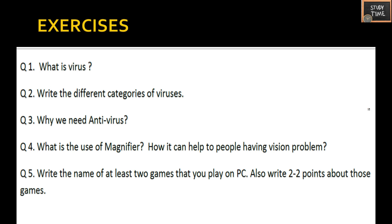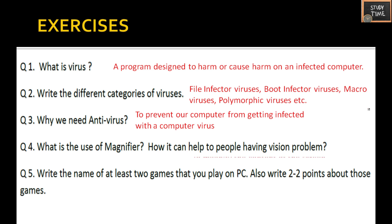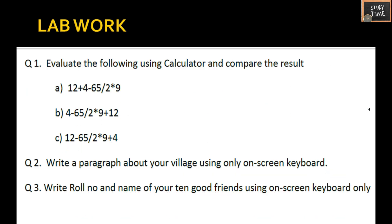Now we will see the exercises from this chapter. What is a virus? — A program designed to harm or cause harm on an infected computer. Write the different categories of viruses: file infector viruses, boot infector viruses, macro viruses, polymorphic viruses. Why do we need antivirus? — To prevent our computer from getting infected with a computer virus. What is the use of magnifier? — To magnify the content of the screen and help people with vision problems. Also write the names of at least two games you play on PC.